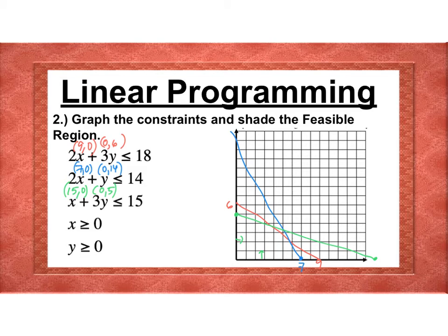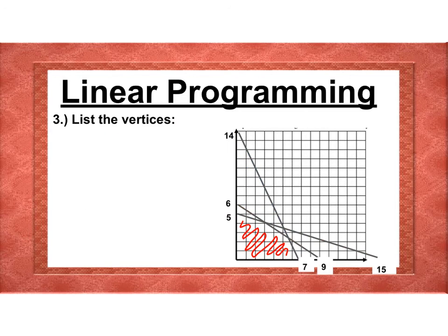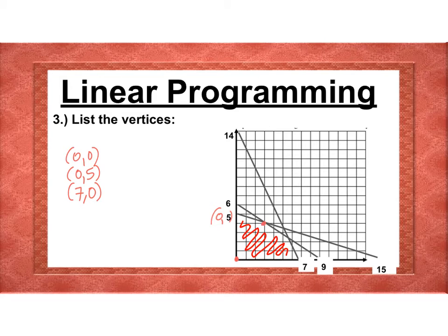The feasible region is the shaded area below all the constraint lines. From it we identify all five vertices: (0, 0), the y-intercept at (0, 5), the x-intercept at (7, 0), and the intersection points (3, 4) and (6, 2). If you're unsure about intersection points, graph the two lines on your calculator and use second trace to find them.